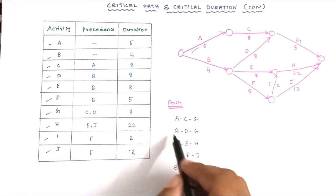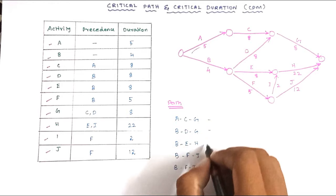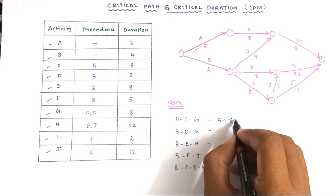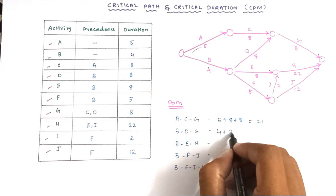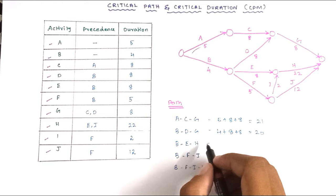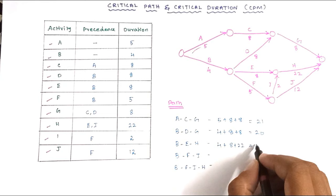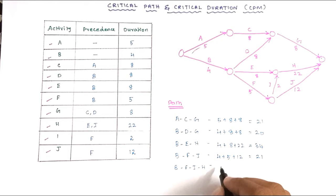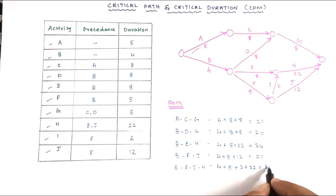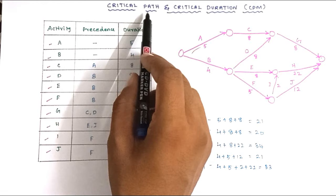Now we calculate the corresponding durations. Path A–C–G: 5 + 8 + 8 = 21. Path B–D–G: 4 + 8 + 8 = 20. Path B–F–J: 4 + 5 + 12 = 21. Path B–F–I–H: 4 + 5 + 2 + 22 = 33. The critical path is the path with the longest duration, as we defined earlier.